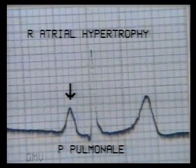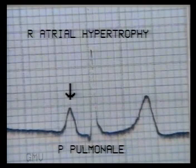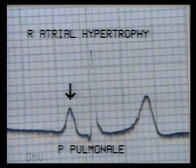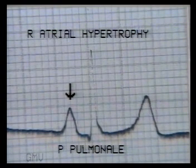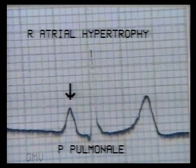In this ECG, lead 2 shows a tall and peaked P wave that is 3 small squares tall. This is P pulmonale, suggesting right atrial hypertrophy.